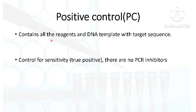Positive control again contains the master mix and DNA template with the target of interest. It is used to check for the sensitivity of your PCR reaction — that means to differentiate true positives from false positives. It will also ensure that there are no PCR inhibitors in your reaction setup.